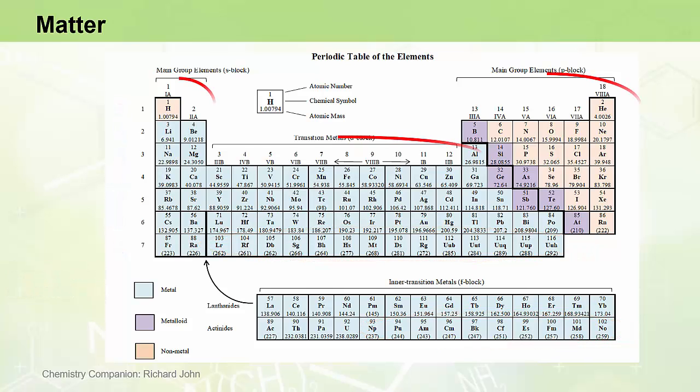The eighteen vertical columns of the Periodic Table are called groups, and they are numbered one through to eighteen. However, an old convention of naming the groups using Roman numerals and the letters A and B, shown here, is still useful in remembering some of the trends observed in the Periodic Table, and we will refer to both group naming conventions throughout this video series.